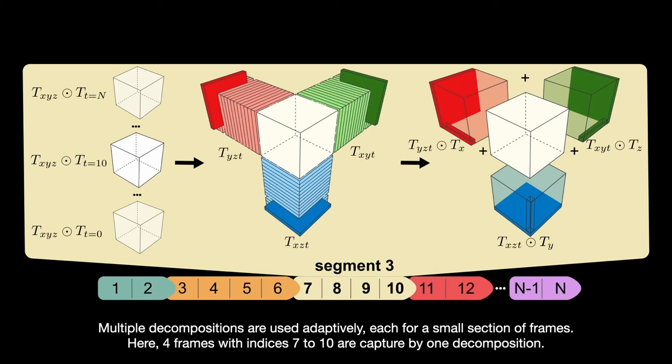In the example above, 4 frames with indices 7 to 10 are captured by one segment.